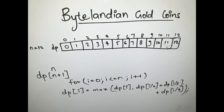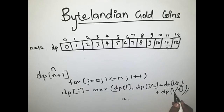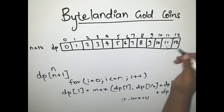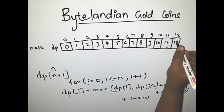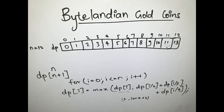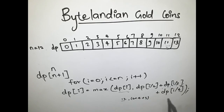Now let's see what happens when i=12. You get max(dp[12], dp[6] + dp[4] + dp[3]) = max(12, 6 + 4 + 3) = max(12, 13) = 13. So you get an option to exchange 12 coins for 13, which is obviously a great choice. We take the deal and dp[12] = 13. This is how you get the maximum number of coins in this problem — by taking the max of dp[i] and dp[i/2] + dp[i/3] + dp[i/4].